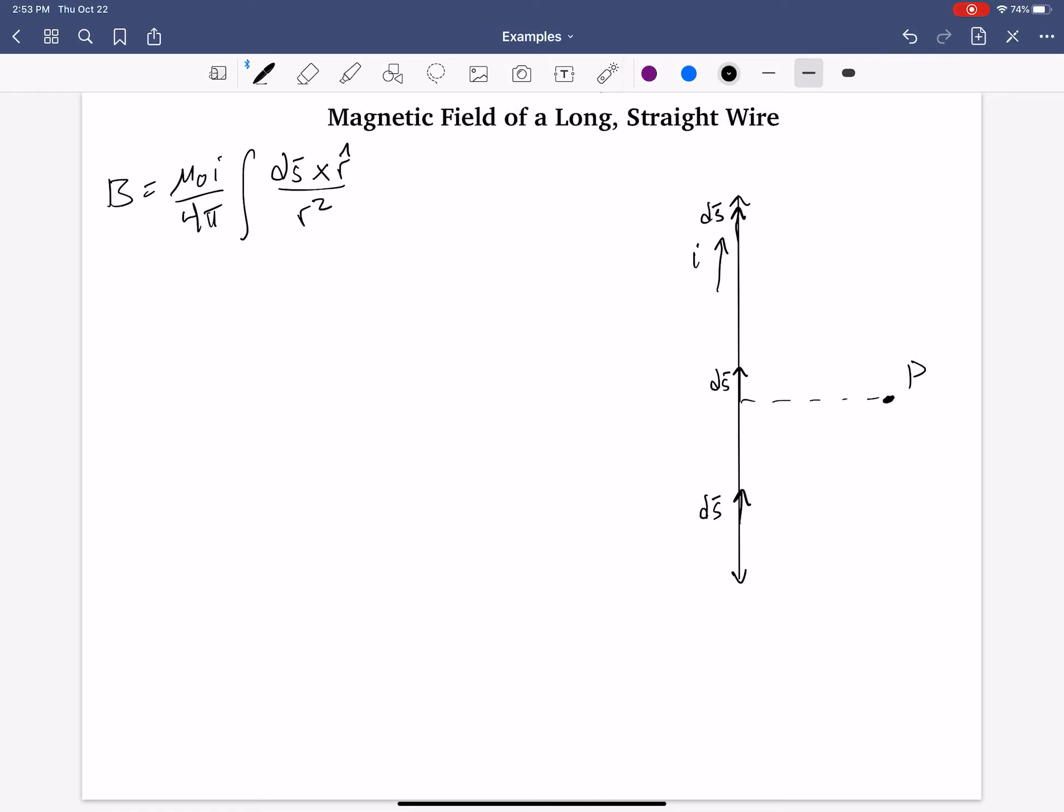We have wire segments of length ds. Each of them are different distances from point P. Let's say that one is capital R, this one is capital R prime, and the one above is R double prime. The magnitude of the magnetic field at point P will be different depending upon those distances. But they all will contribute to the field at point P. This is why integration is so incredibly helpful. We can just take one wire length of ds and integrate all of those contributions across the entire length of the wire.